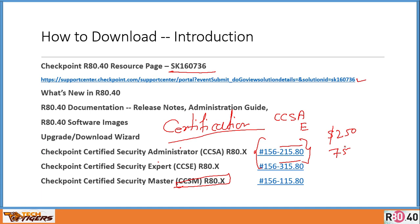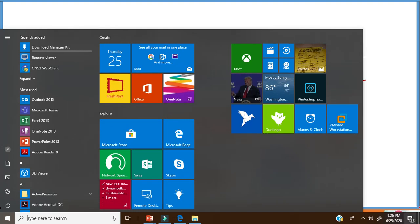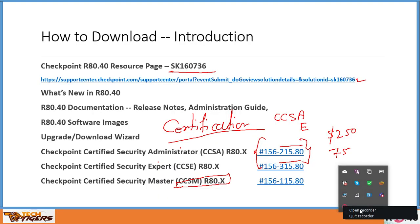So that's all, guys — that's all in this short video, but believe me, it's a foundation. Just please download these four things: the R80.40 ISO image, the R80.40 Smart Console, the documentation, and the upgrade package. Just keep watching my next videos. I make sure you will become professional in Checkpoint — that's my promise. I'll connect to you in my next video. Have a great day, stay happy, stay healthy, and stay safe. Bye, thank you.